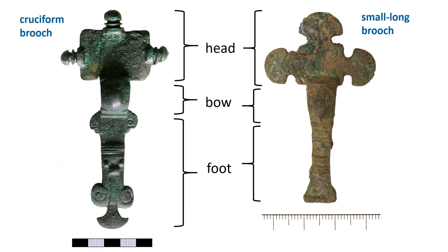We'll start with the long brooches. There are two major types: the cruciform and the small long. All long brooches have three parts: the bow in the centre, the head at one end, and the foot at the other. The trick to describing these brooches, which can look extremely hard to describe, is to divide a brooch into its three parts and only look at one part at a time.